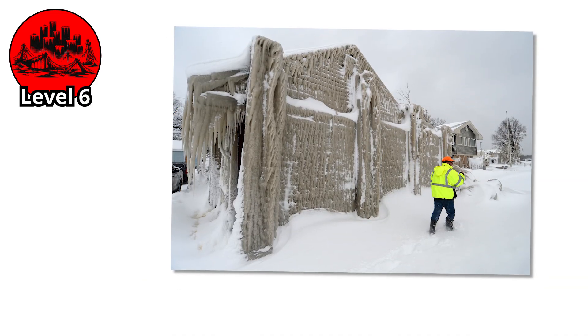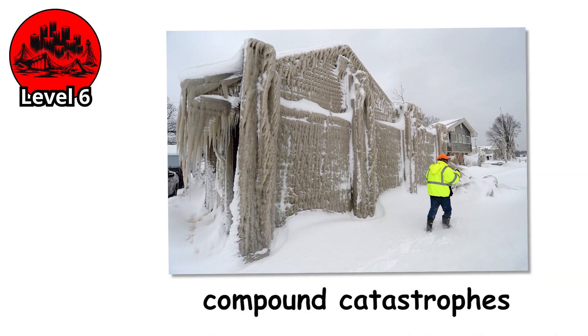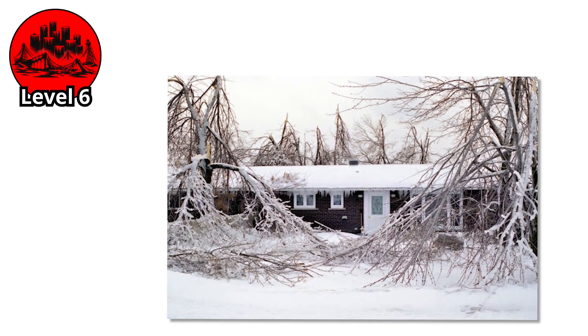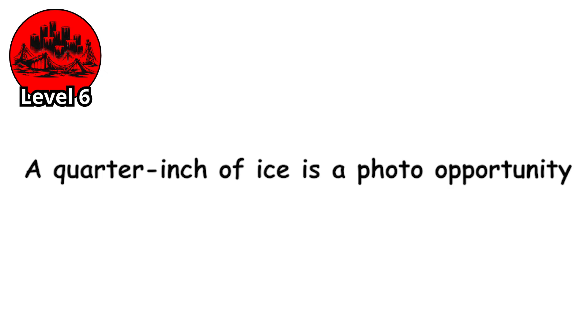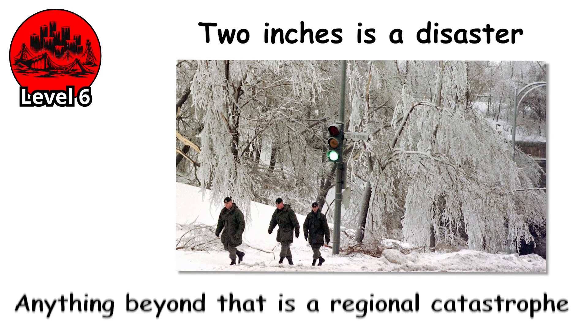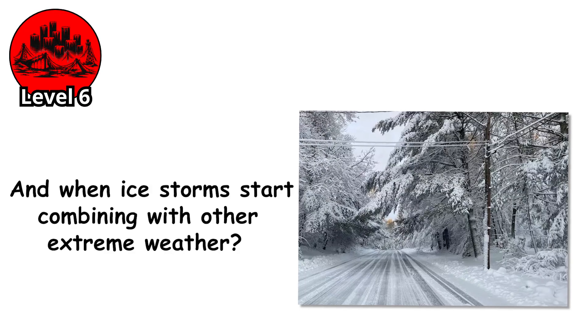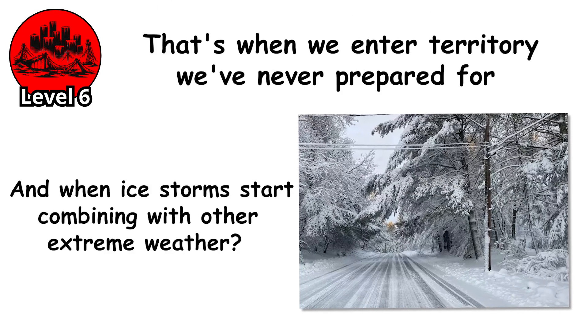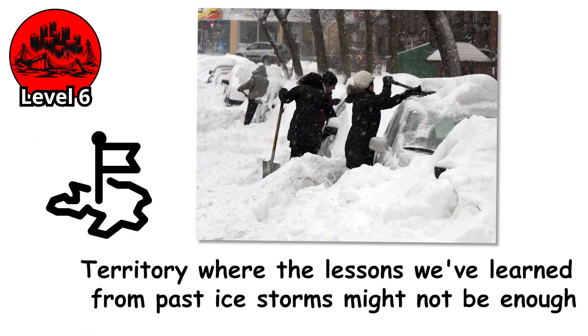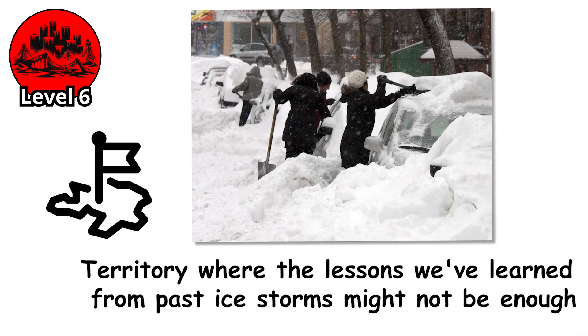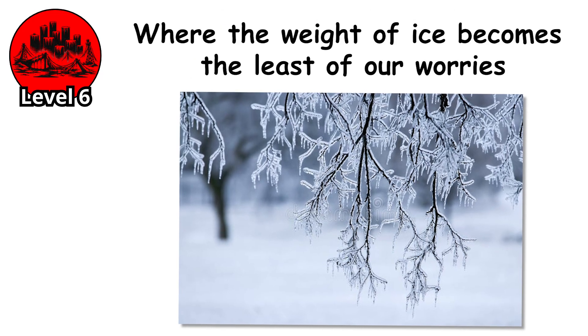From that deceptive, beautiful coating at Level 0 to the compound catastrophes that could define our future, ice storms reveal a fundamental truth: nature doesn't need to be violent to be deadly. It just needs to be heavy. A quarter inch of ice is a photo opportunity. Half an inch is a hazard. An inch is an emergency. Two inches is a disaster. Anything beyond that is a regional catastrophe. And when ice storms start combining with other extreme weather, that's when we enter territory we've never prepared for — where the lessons we've learned from past ice storms might not be enough, where the weight of ice becomes the least of our worries.